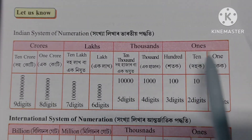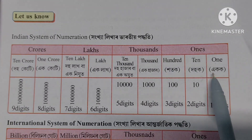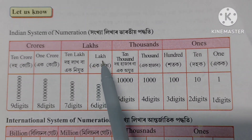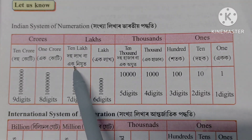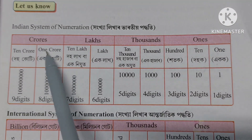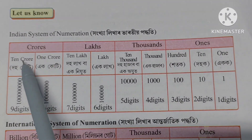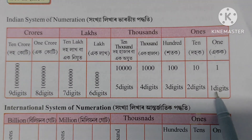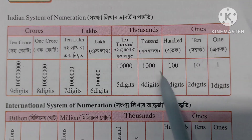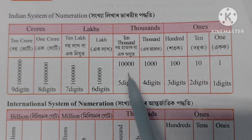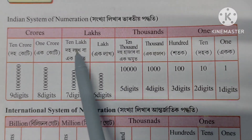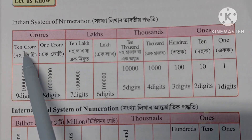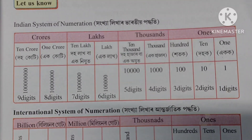This is the Indian System of Numeration. We have place values: 100, 1000, 10,000, 1,00,000. So there are 1 crore, 8,000, 1,00,000 and 1,00,000. That's how we set up the expanded form.